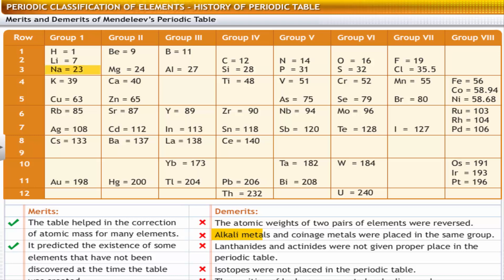Alkali metals such as sodium and potassium and coinage metals such as copper, silver, and gold were placed in the same group, even though their properties are significantly different.